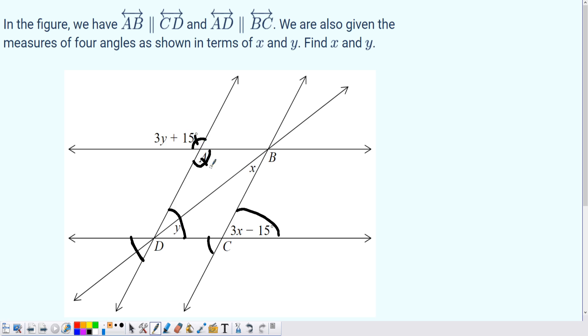Now a similar idea is what I can use to get with the 3y+15. So if I say that AB and DC are my parallel lines and AD is my transversal, now let's do the same logic.